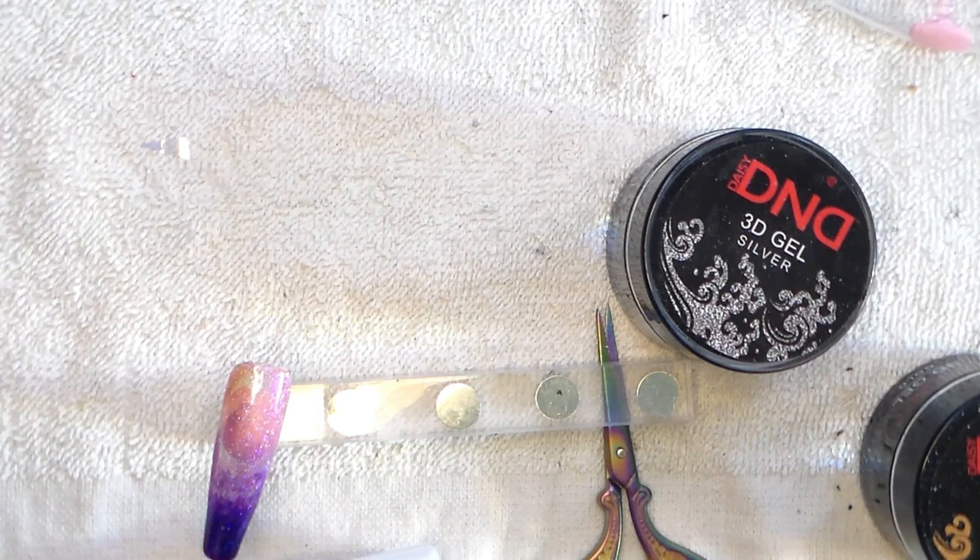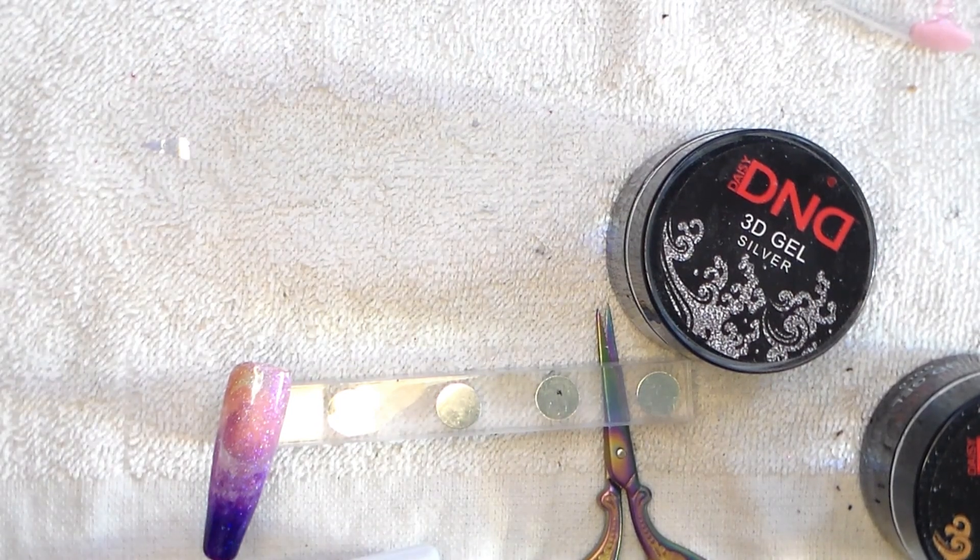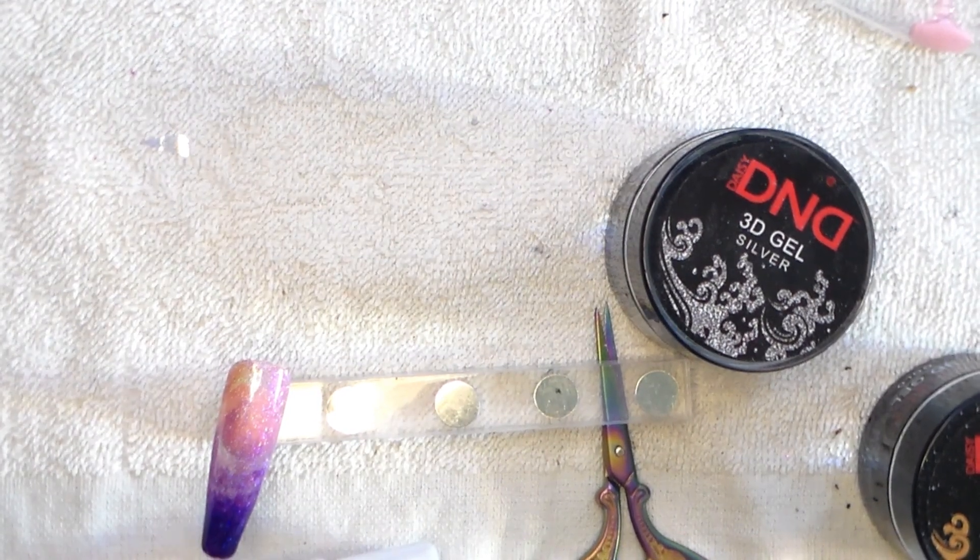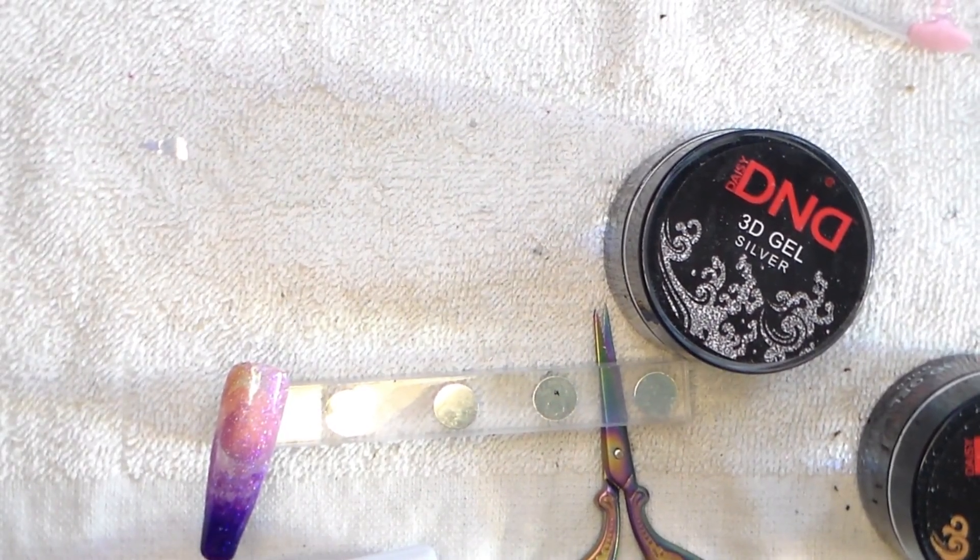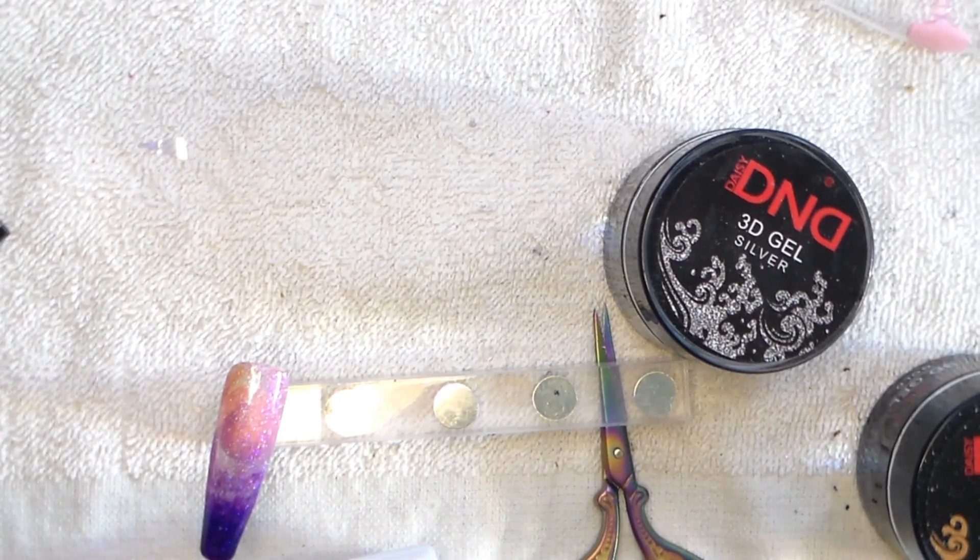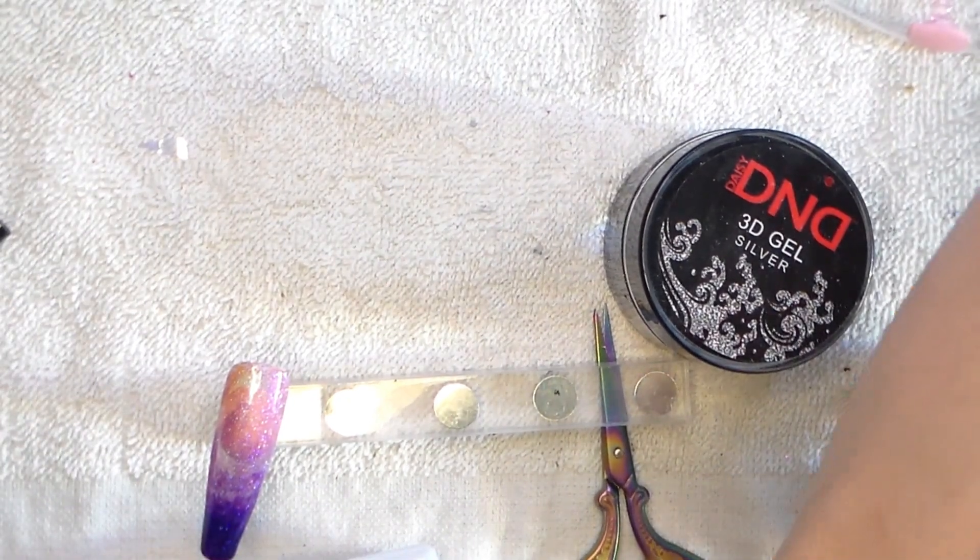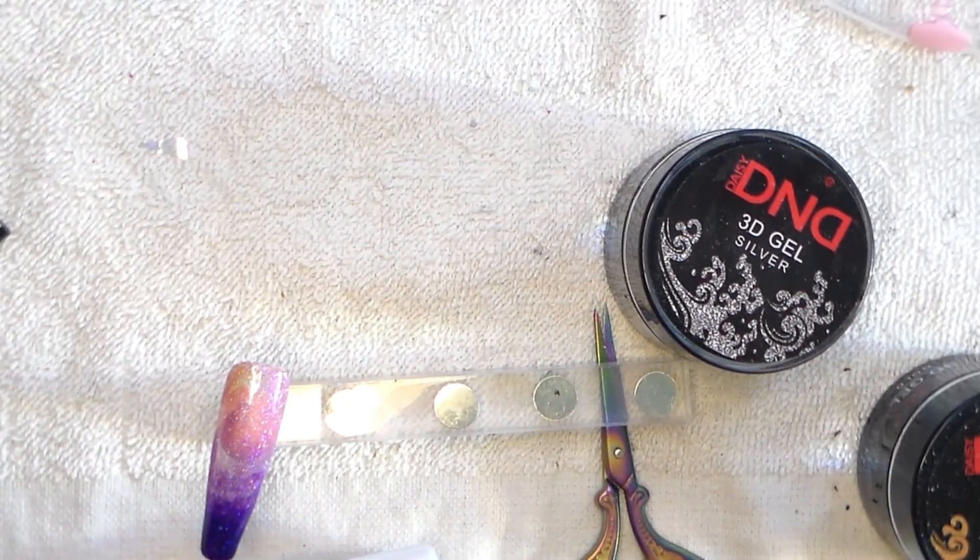Okay, so as you can see, I used a purple polish and an ombre brush and just ombred it up quickly, just for a design that I could try my spider gel with. I'm also using DND 3D gel in silver.